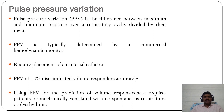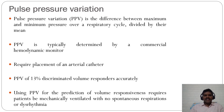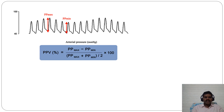Pulse pressure variation and newer dynamic indices are very useful because they predict fluid responsiveness, not just volume status at a given point in time. Pulse pressure variation (PPV) is the difference between maximum and minimum pulse pressure over a respiratory cycle divided by the mean pulse pressure. It is typically determined by a commercial hemodynamic monitor requiring placement of an arterial catheter. A PPV of 13% accurately discriminates fluid responders. However, PPV requires the patient to be mechanically ventilated with no spontaneous respirations and no dysrhythmias.